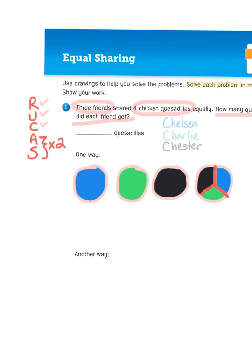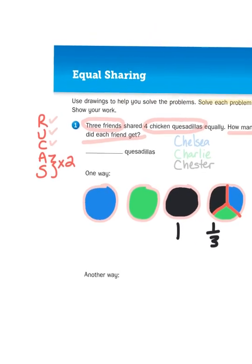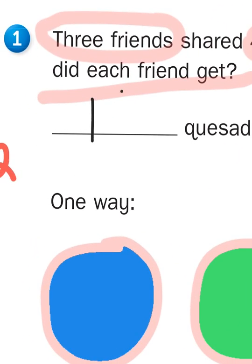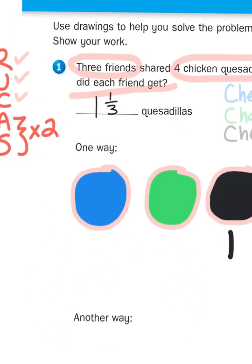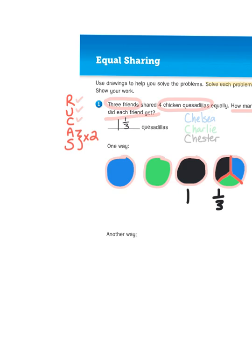So when I look at, say, Chester, how much is he going to get? Well, I can see that he's got one whole quesadilla right here, and he's got one-third of a quesadilla here. So his total amount of quesadilla that he gets is one and one-third. That's a mixed number right there. And the same would be true for Chelsea and Charlie. They would each get one whole and then a portion of the leftover quesadilla. Now that's one way to approach this problem.